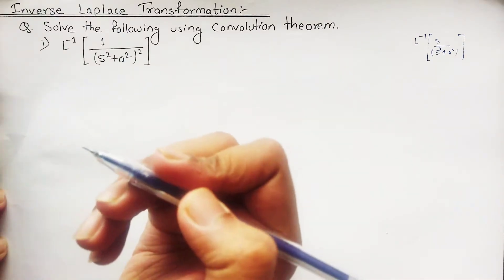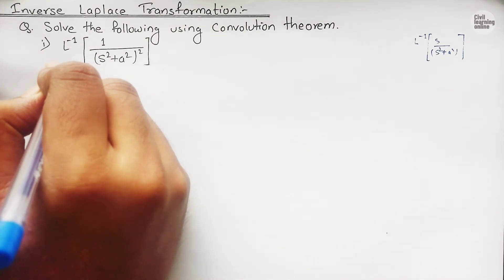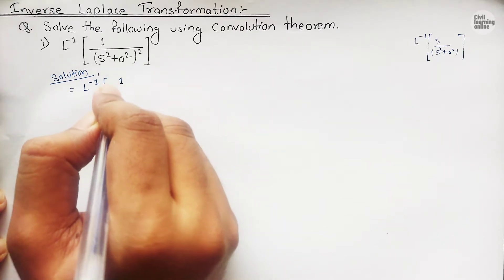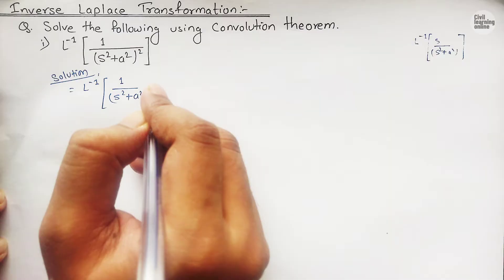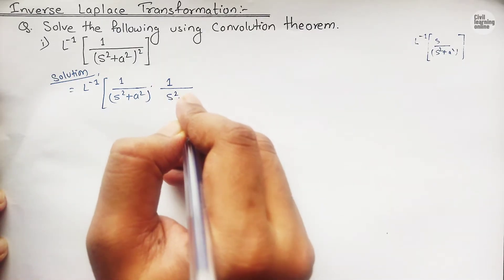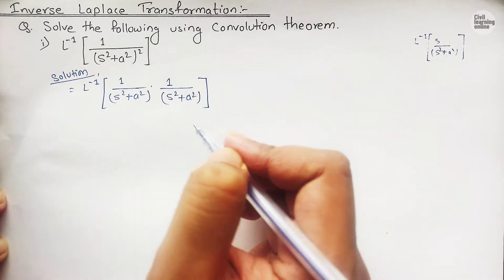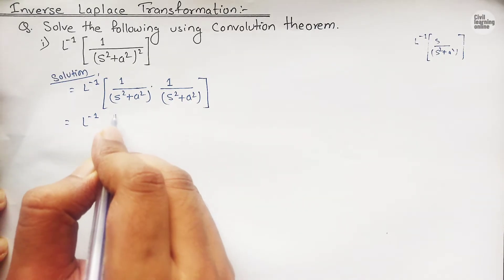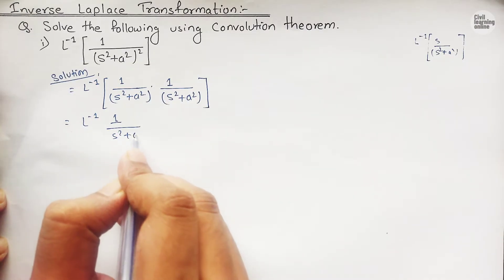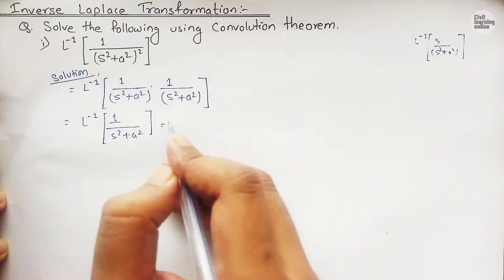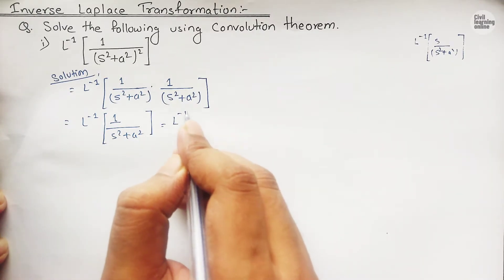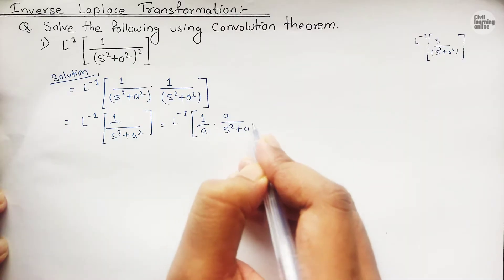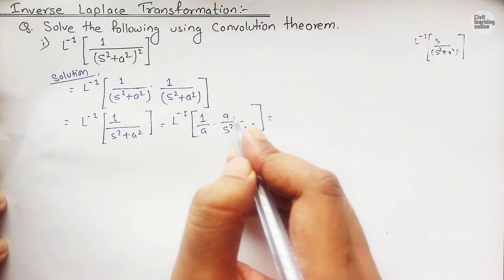In order to apply the inverse convolution theorem, we will proceed writing the solution. We can rewrite this expression as the inverse Laplace transformation of 1/(s²+a²) times 1/(s²+a²). Now we will apply the inverse Laplace transformation separately on each term. For 1/(s²+a²), in order to apply the formula we should have (1/a) times a/(s²+a²).